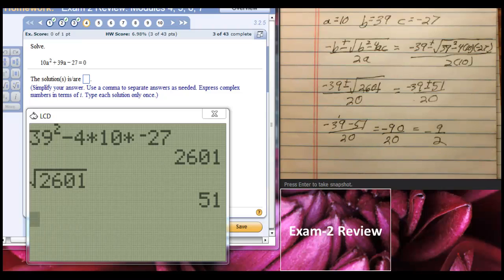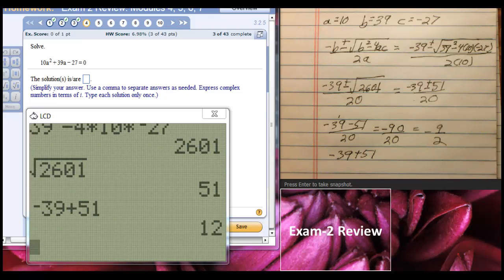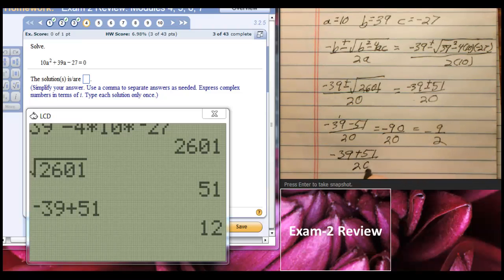And let's see, negative 39 plus 51. I am going to use the calculator for that. Negative 39 plus 51, enter. That'll be 12. So we'll have 12 divided by 20. And you can math frac that if you're unsure how to reduce. 2 goes into 12 six times, 2 goes into 20 ten times.